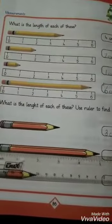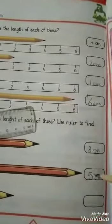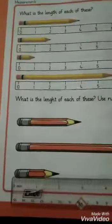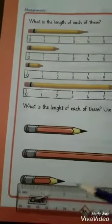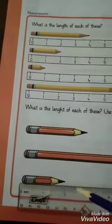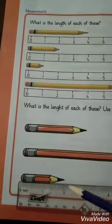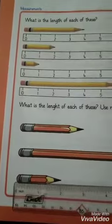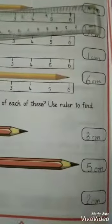Look at the last one. We put a measuring scale in front of the pencil: zero, one, and two. This pencil is two centimeters long. We can write two centimeters here.